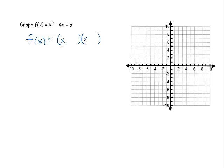I would start off with x and x, that gets us x squared. What numbers multiply to negative 5? How about negative 5 and positive 1, and that's about it.